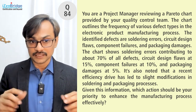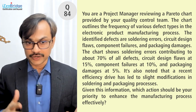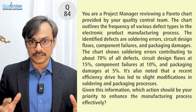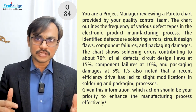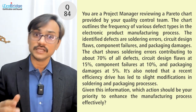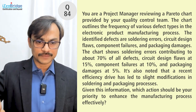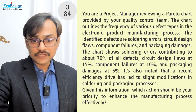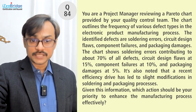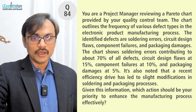The first category — soldering errors — is contributing 70 percent, so that's what I should be most worried about. The question also indicates that some work has already been done there and there was some improvement. Given this information, what action should be your priority to enhance the manufacturing process efficiently?